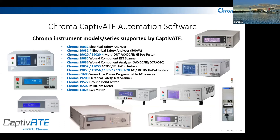Captivate also supports control of the Chroma 61600 low power programmable AC power sources. The AC source can be used to power a product under test to perform active leakage current measurement. Instead of connecting the product's power to the wall, which may have some deviation affecting leakage current measurements, we can use an AC source to provide stable, controlled power and get better, more accurate results.